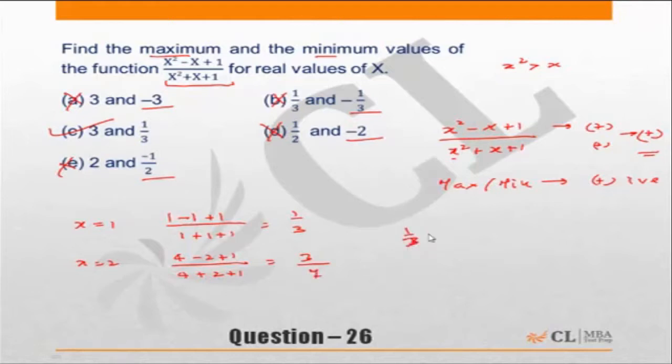Now 1 by 3 is less than 3 by 7 or in other words as I am increasing the value of x from 1 to 2 the value of the function is increasing. So my minimum value would be then 1 by 3. Similarly you could check out for the maximum also.